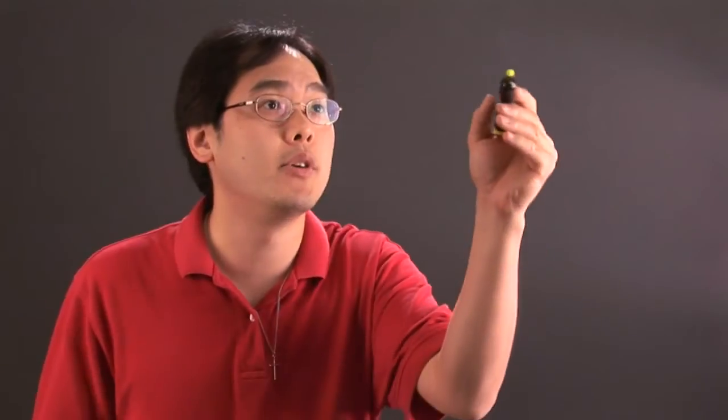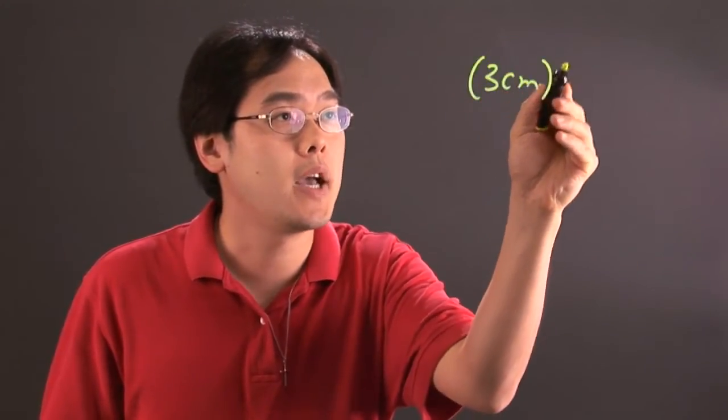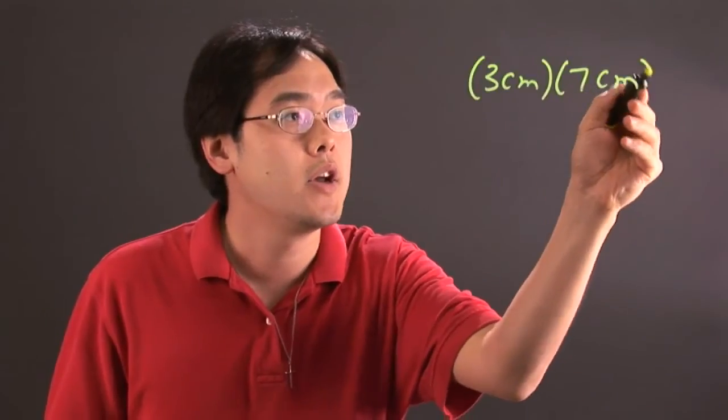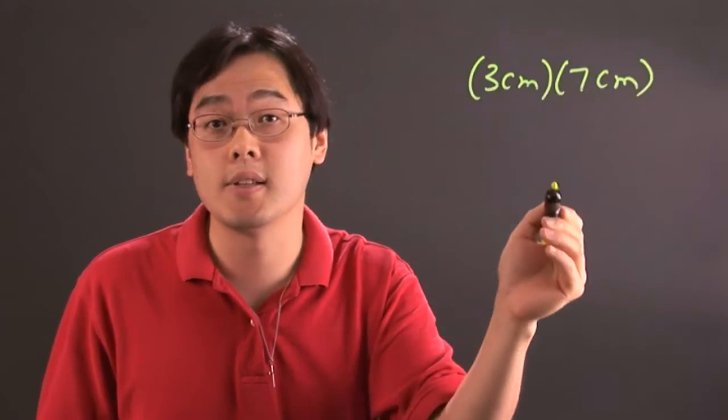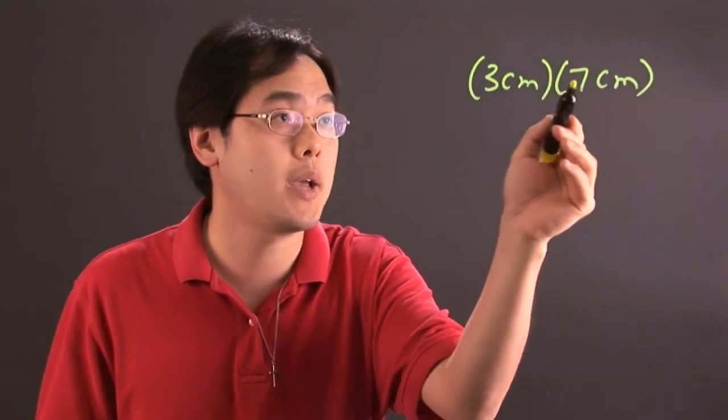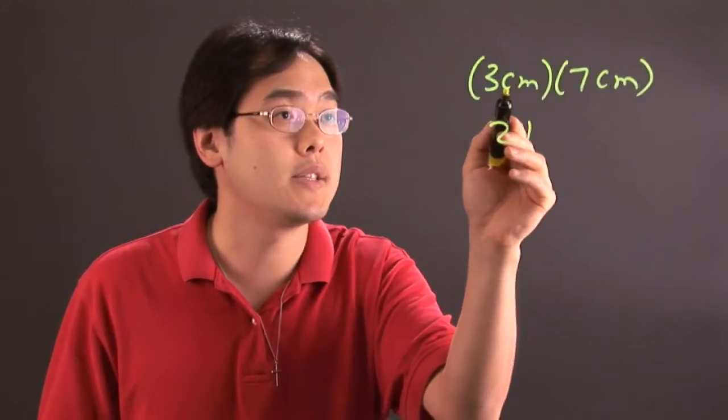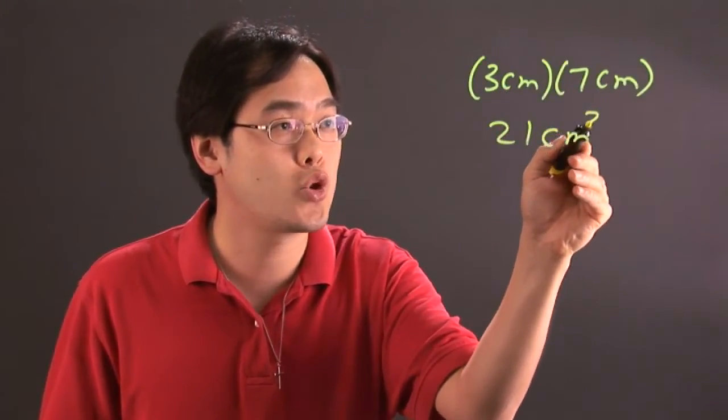But when it comes to multiplying centimeters, you have to multiply not just the numbers, but the units themselves. So here's an example. If you have, for example, 3 centimeters times 7 centimeters, you're multiplying the numbers and the centimeters themselves. So you've got to do 3 times 7, which is 21, and centimeters times centimeters, which is centimeters squared.